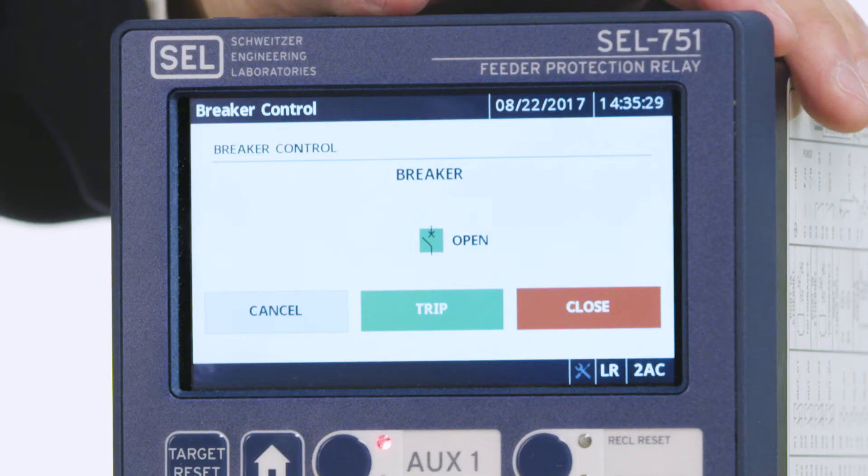Now that I have logged into the relay, you can see the options that I am given to operate the breaker. The first is to cancel or back out of the breaker control. The next is to trip the breaker or open the breaker. The last is to close the breaker.